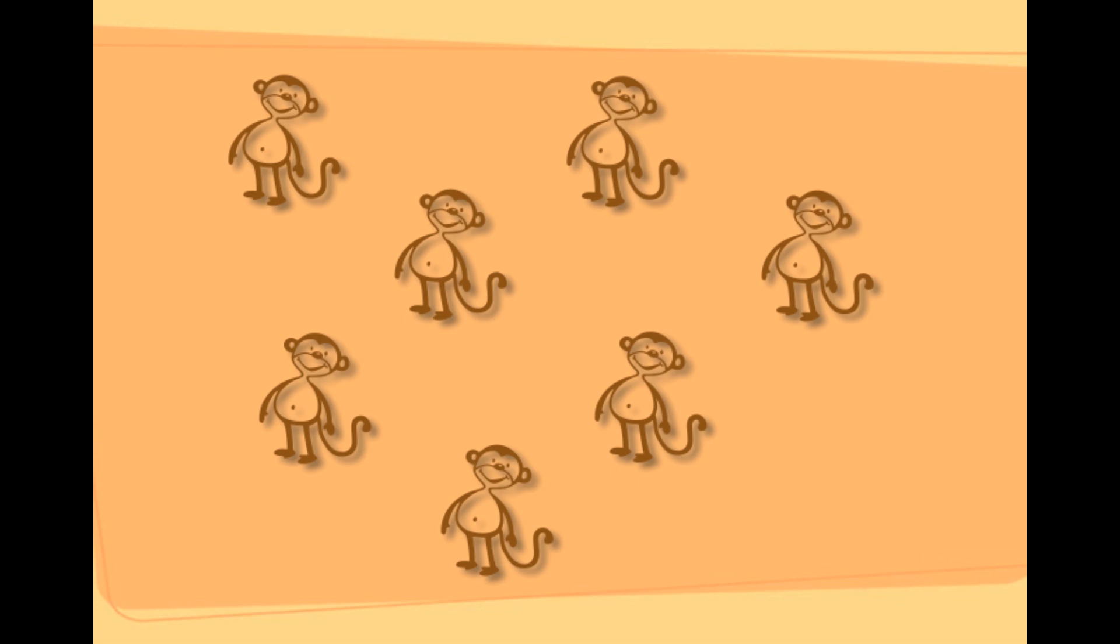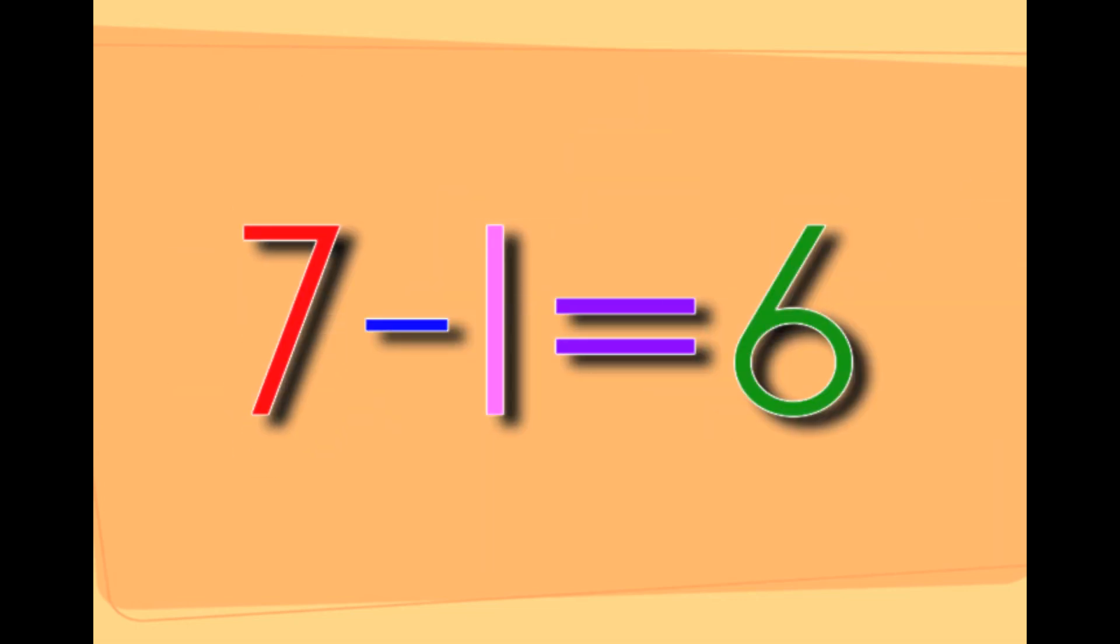These are seven monkeys. If you take one monkey away from the seven monkeys, it will leave you with six monkeys. Seven minus one equals six.